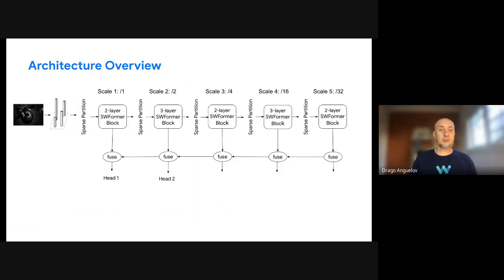So this is the overall architecture of our model. It takes a sequence of point clouds as input and does the standard PointPillar-style voxelization, which produces a set of sparse features where we have lidar points. Then these sparse features are processed by several layers of SWformer blocks. One block per hierarchical scale. These multi-scale features then are fused with transformer layers and sparse sampling operations. And we have several heads at several resolutions detecting objects of different sizes.